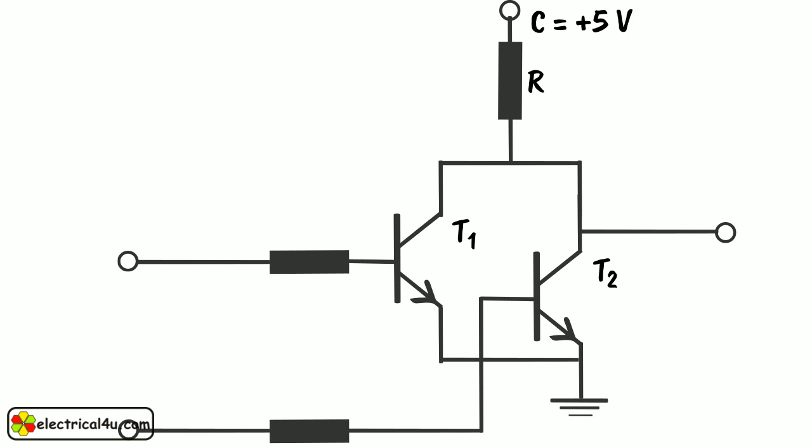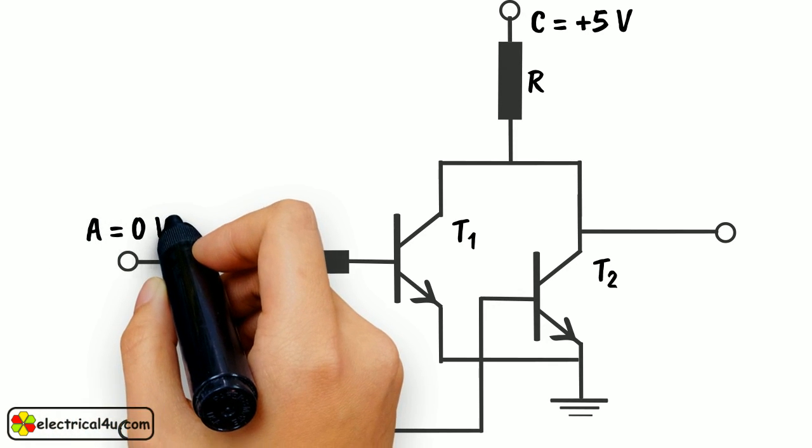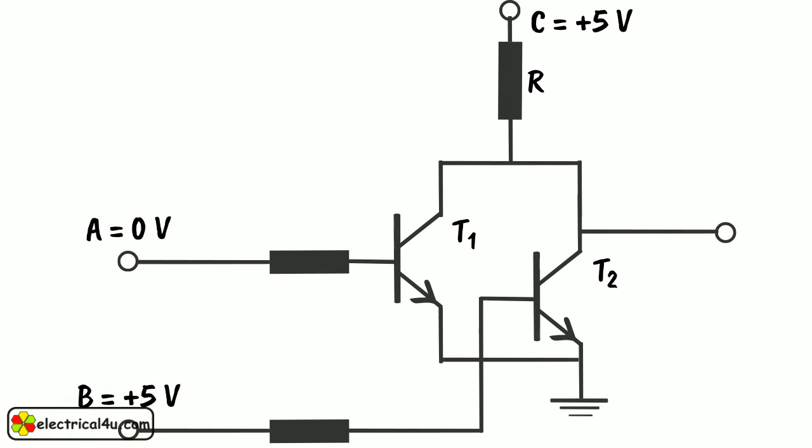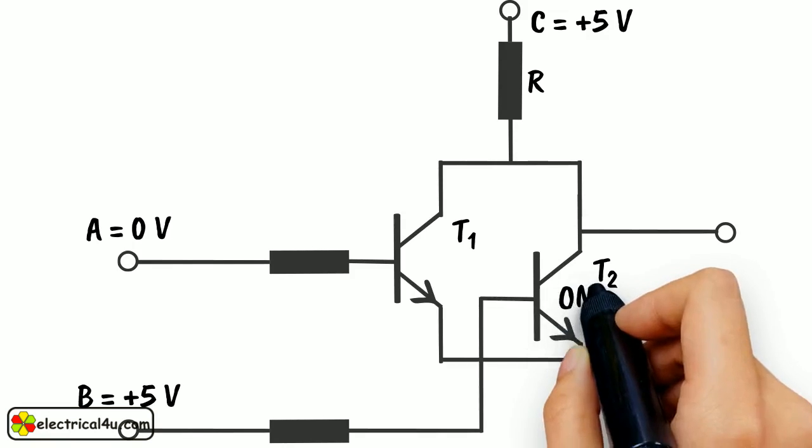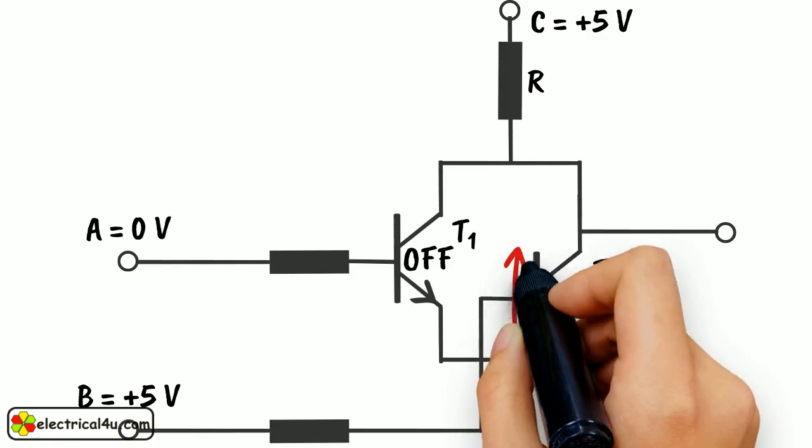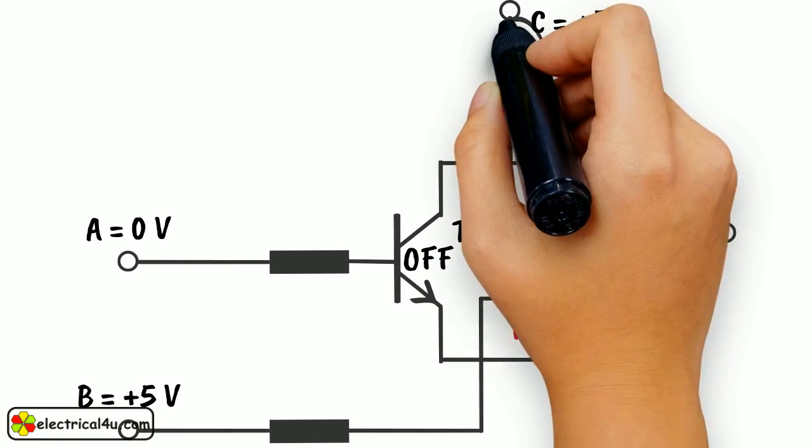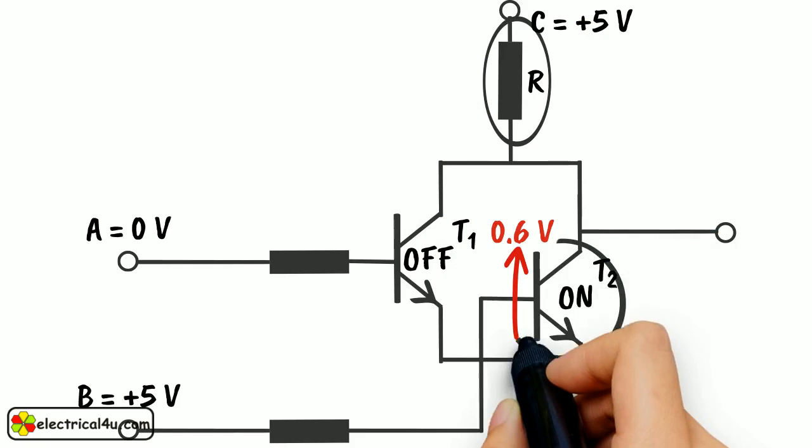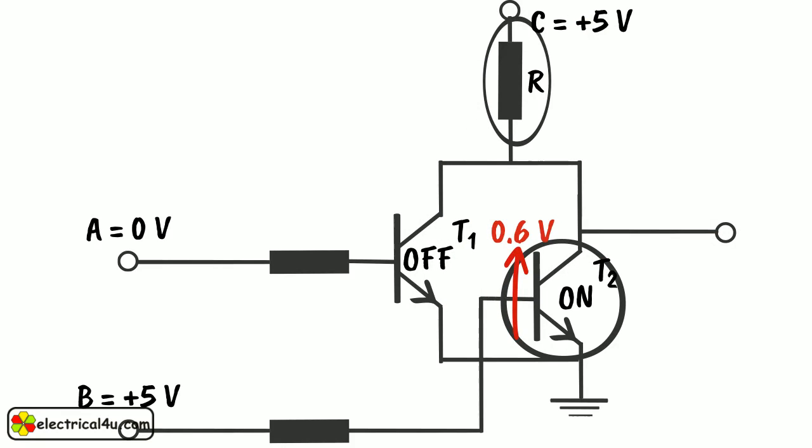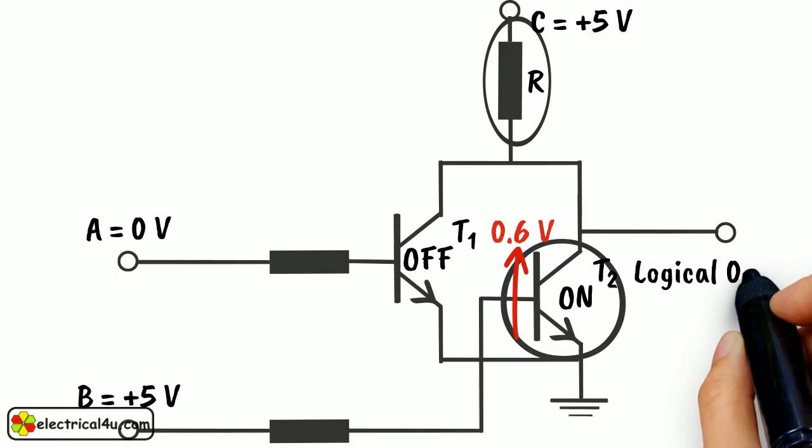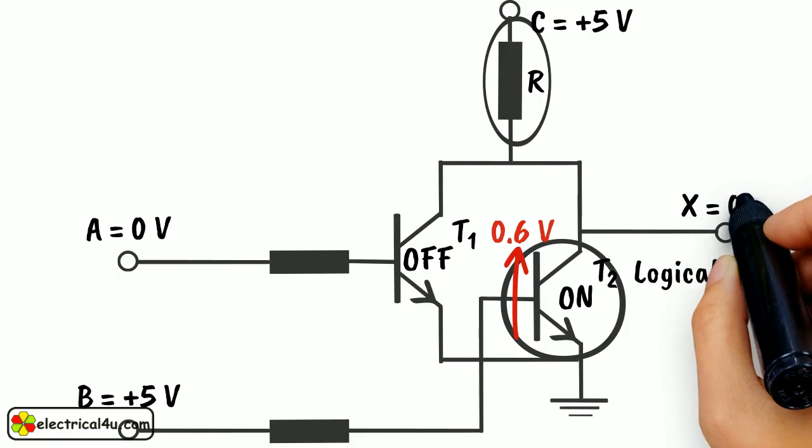Now if either of inputs A and B is given with plus 5V, the only corresponding transistor will be in ON condition. But in this case also, supply voltage will get path to the ground through R and ON transistor. And similarly, the output will be in logical zero state which is 0.6V.